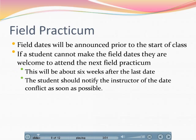Field dates will be announced prior to the start of the class. If you can't make the dates, we know things come up. We will give you a shot at meeting with us the second time we offer the class — the second round after the one that you're signed up for. That would probably be six to eight weeks from the start of your class. Please let me know if you can or cannot make the field date if some issue comes up, so we can keep tabs on everybody.